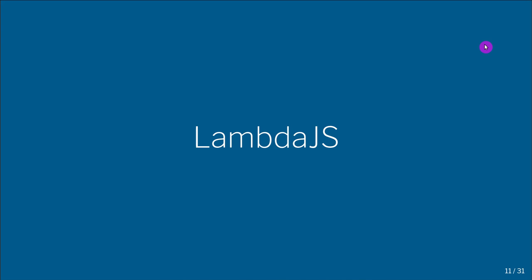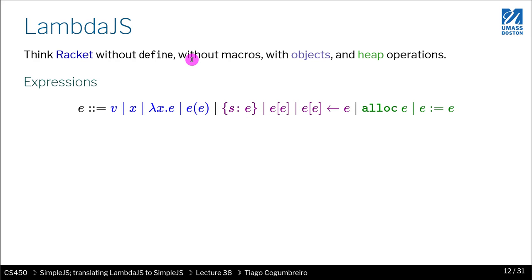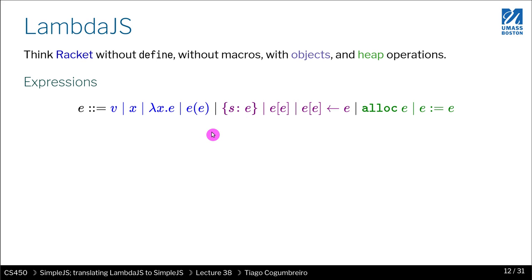Now let's talk about our target language, Lambda.js. This is the language that I'm going to include an interpreter for in homework 8. This interpreter comes from the paper 'The Essence of JavaScript'. Lambda.js can be thought of as Bracket without defines, without macros, and with two new features: objects and an explicit heap. The heap is a first-class construct in Lambda.js.